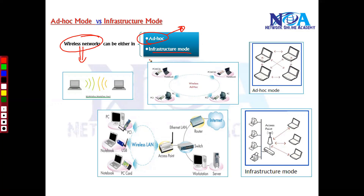The basic difference is simple. In ad-hoc mode we don't use any access point. You connect your devices directly — for example, two laptops connecting via Wi-Fi or a wireless network without using a centralized device, similar to connecting a crossover cable between two computers.